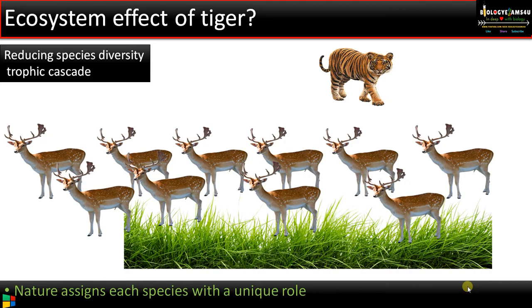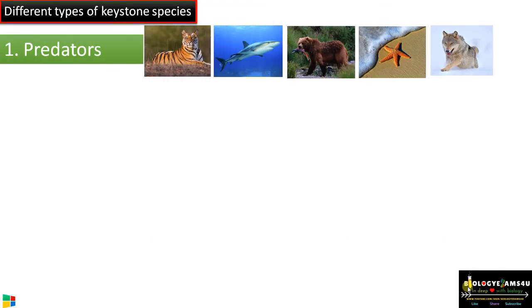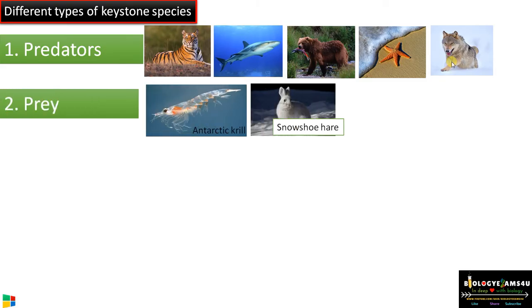That is why we take huge effort to conserve keystone species — they are the keystone for the sustenance of an ecosystem. Moving into the different types: keystone species are often predators, very low in number but having a profound impact on stabilizing the ecosystem. Examples include tiger, shark, grizzly bears, starfish, wolf, and others.